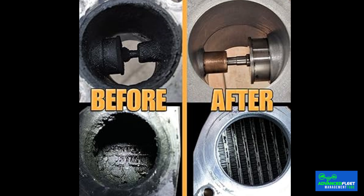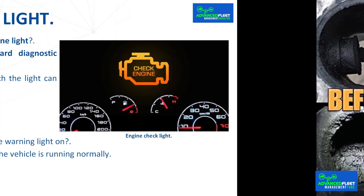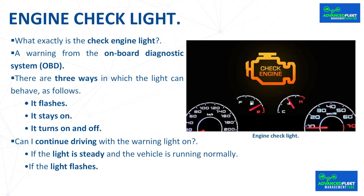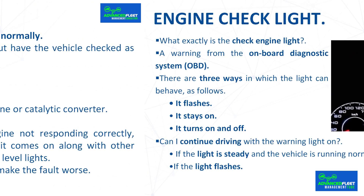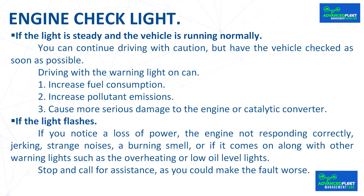Depending on the type of fault, the EGR valve may need to be cleaned with specific products or replaced with a new one to ensure efficient exhaust gas recovery. Third, it turns on and off. If this happens, it is because the OBD has performed a new fault detection test after the light first came on and has not found any errors, so it turns off.